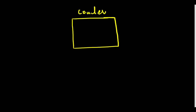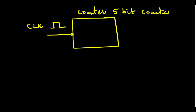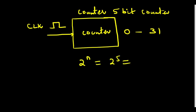Before going to the 8051, let's understand what a counter is. Consider a 5-bit counter module. When we give clock pulses, this counter will start counting from 0 to 31. Why up to 31? Because it is a 5-bit counter — 2 to the power of 5 equals 32, so it can have 32 states, counting from 0 to 31.